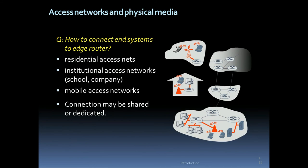Access networks and physical media describe how to connect end systems to the edge router. There are residential access networks, institutional access networks such as schools, companies, and industrial networks, as well as mobile access networks. Connections may be shared or dedicated. On the right side, this is the tutorial view of the access networks and physical media.